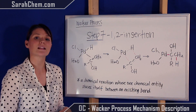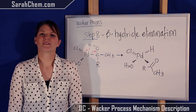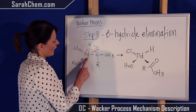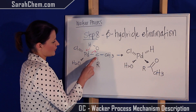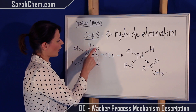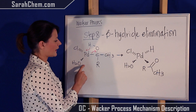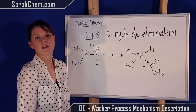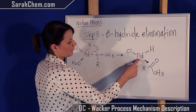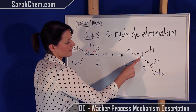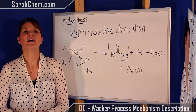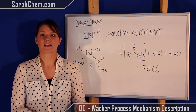Step eight is another beta elimination off that palladium. The alpha position is adjacent to palladium; oxygen is beta to that carbon. The hydride on the beta position moves over to the palladium, and the bond shifts up to make a double bond — much like an earlier step. A hydrogen is placed back on the palladium, which then coordinates to the double bond between carbon and oxygen.